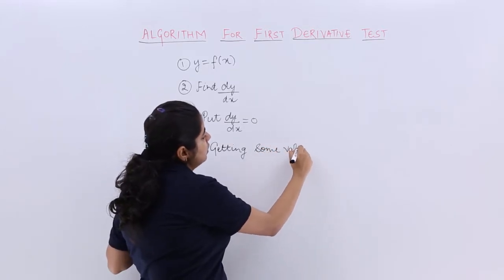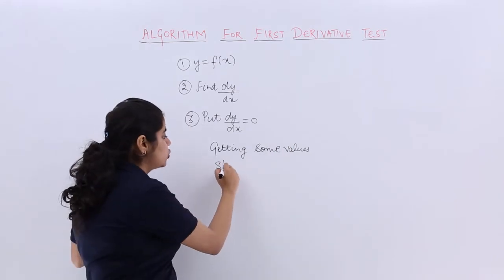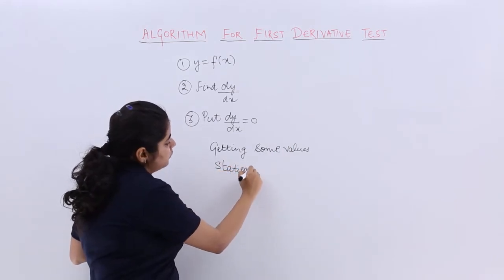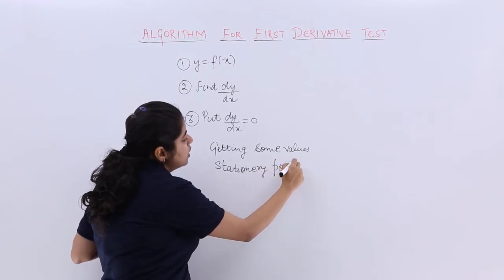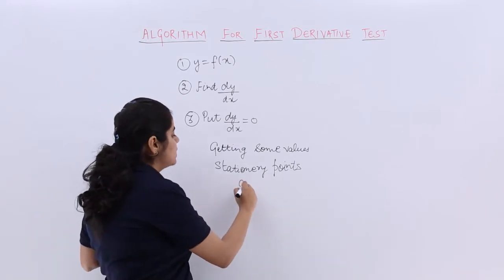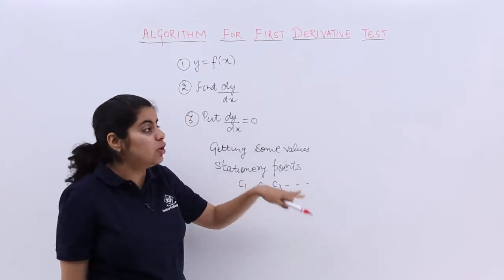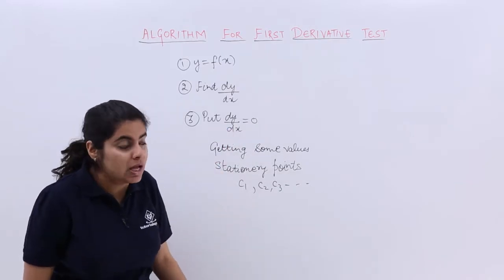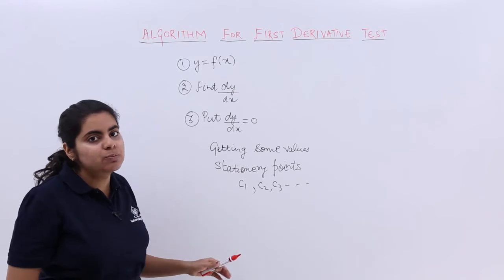You'll be getting some values or some points which are called stationary points. What are they called? Stationary points, or some people also say them as critical points. They may be say c1, c2, c3 and so on, depending upon the degree of dy by dx that you have obtained.